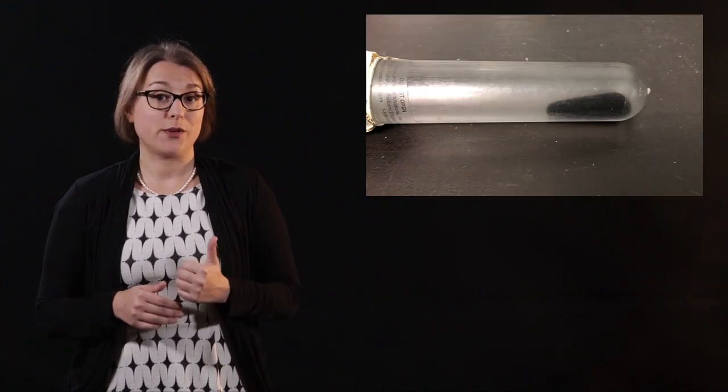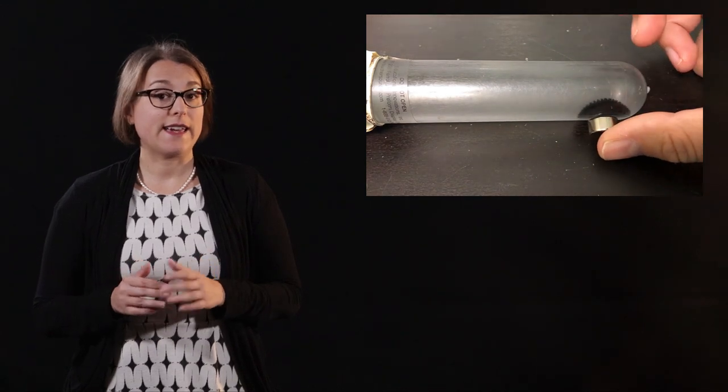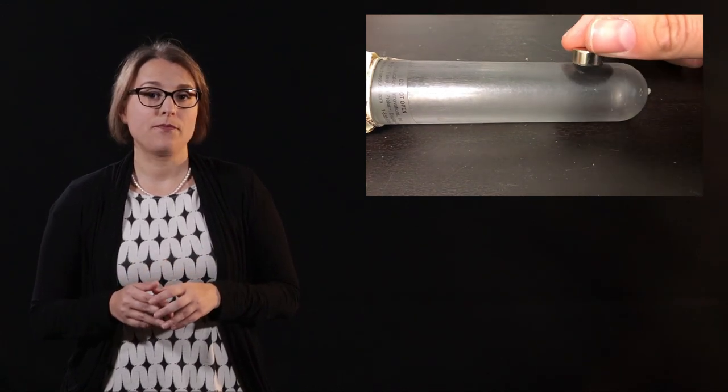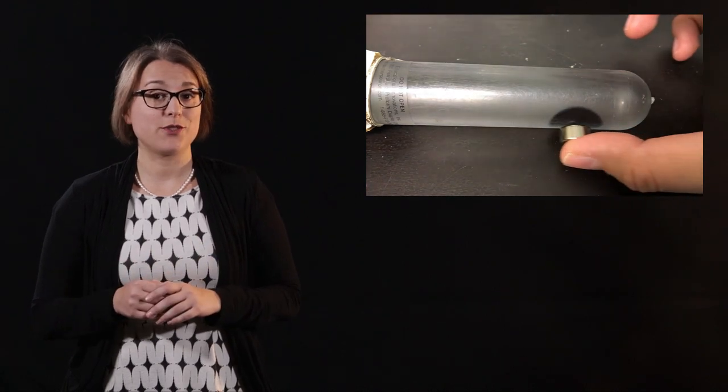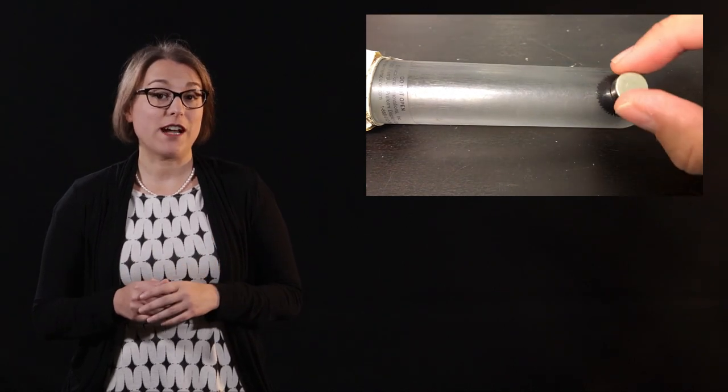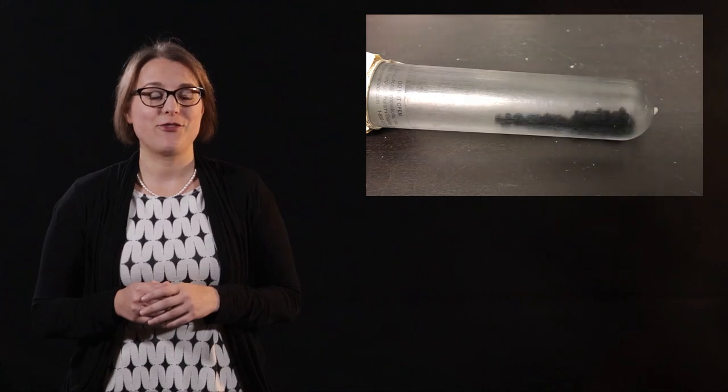A ferrofluid is made up of liquid that can be attracted to a magnet. This is accomplished by suspending tiny magnetic particles into a fluid. We can see the attraction when holding a disc magnet near the ferrofluid.